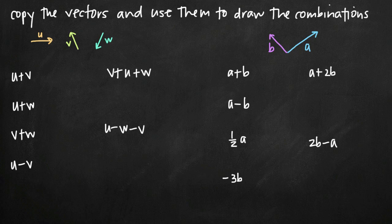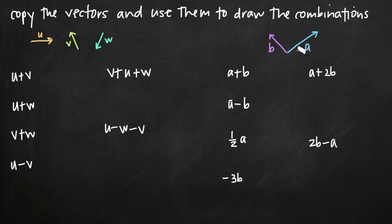Today we're going to be talking about how to use given vectors to draw combinations of those vectors. In this video, we're going to do two different problems. In the first one, we've been given three vectors u, v, and w, and we've been asked to use them to find six different combinations. In the second problem, we have two vectors a and b, and we've again been asked to find six different combinations of those given vectors.